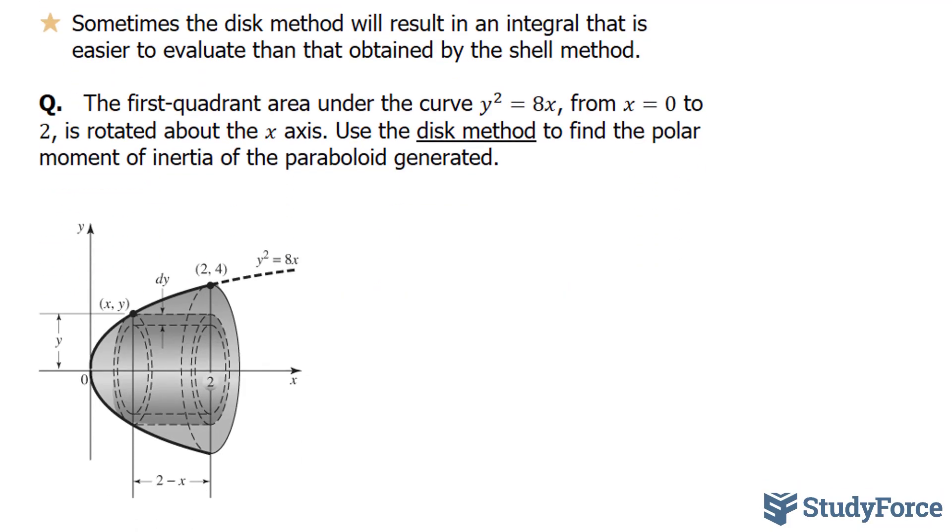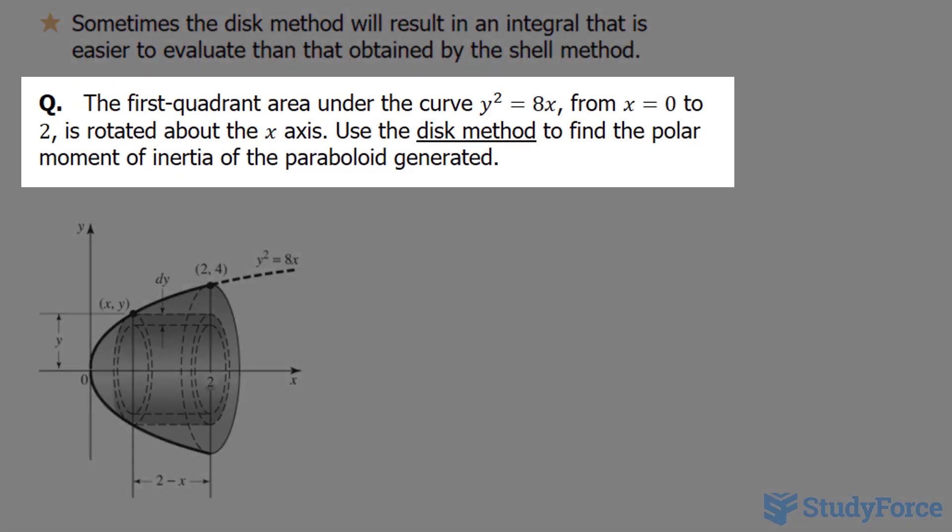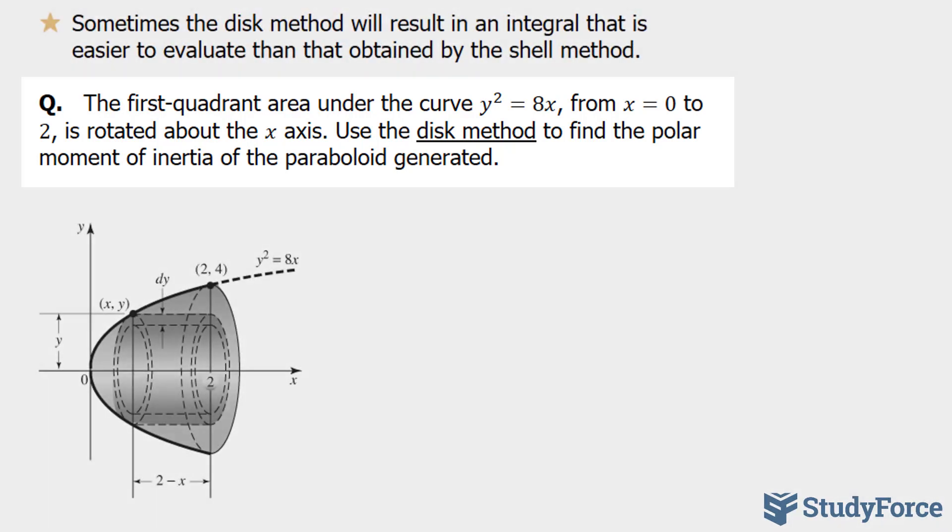So the same question reads as before. The first quadrant area under the curve y squared is equal to 8x from x is equal to 0 to 2 is rotated about the x-axis. Use the disk method to find the polar moment of inertia of the paraboloid generated.